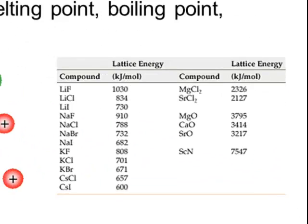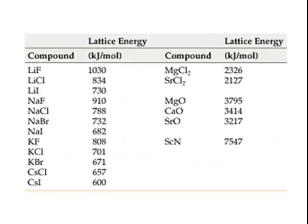Over here to the right is a table showing the lattice energy of various salts — salts is just a common term used to describe ionic compounds. The first pattern is similar to that of molecular compounds. Remember with molecular compounds, atoms that had a small bond length had a high bond energy and were more difficult to pull apart, whereas atoms that were bigger had a larger bond length and therefore a lower bond energy. The same is true for salts: ions that are very small, like lithium and fluoride, will have a high lattice energy, whereas ions that are larger, like cesium and iodide, will have a much smaller lattice energy.